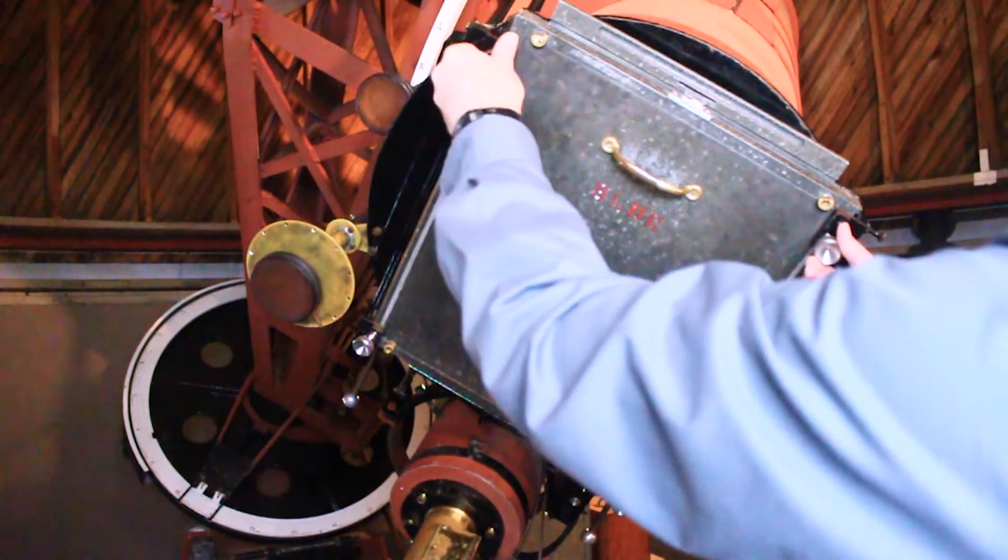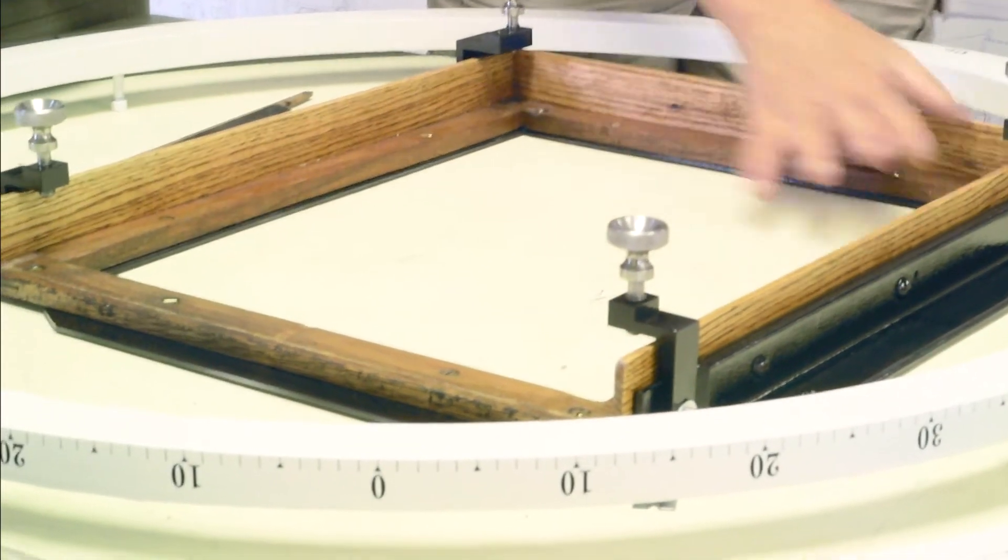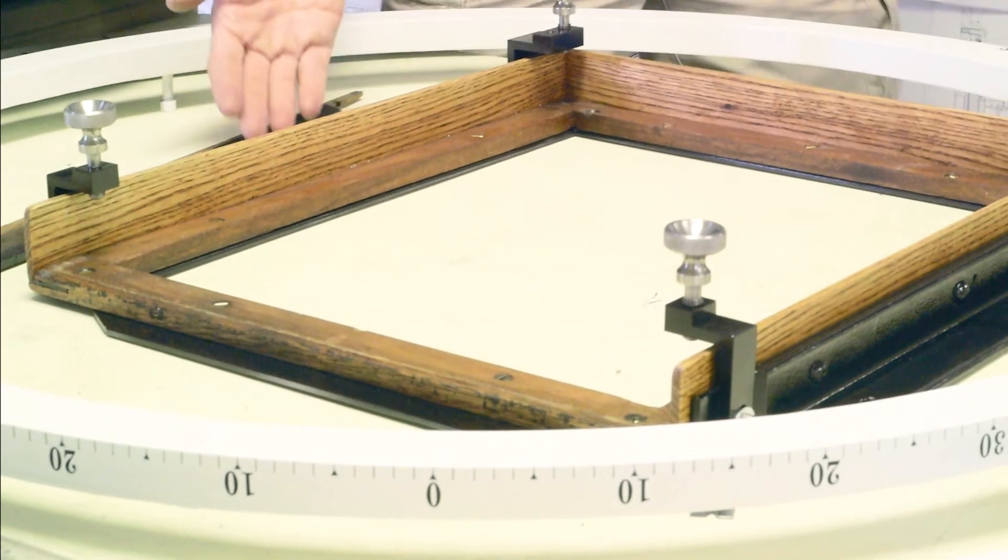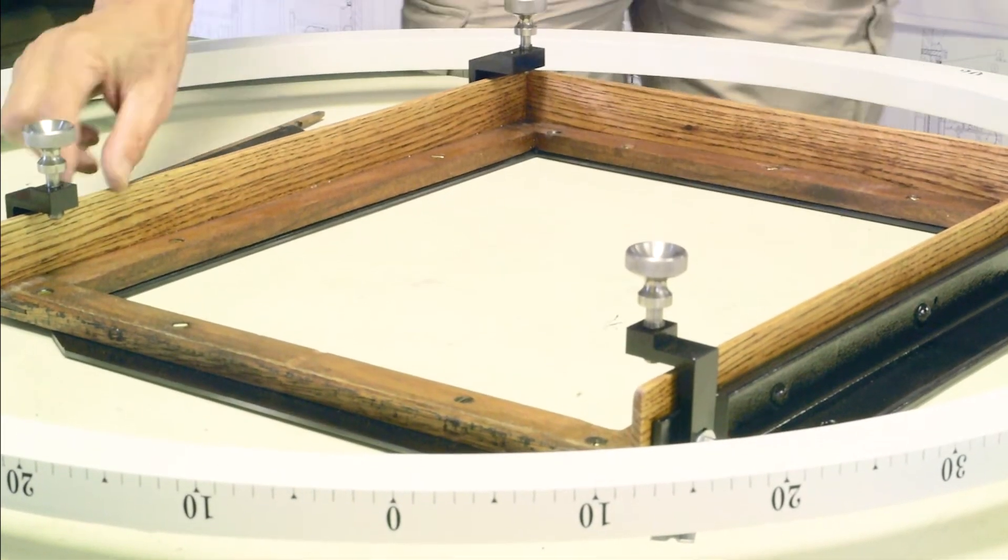But these parts right here, this is the bracket that holds the plate holder, and this fits on the back of the tube, where the plate holder fits in here, and on the inside of this, and on these little wooden parts,